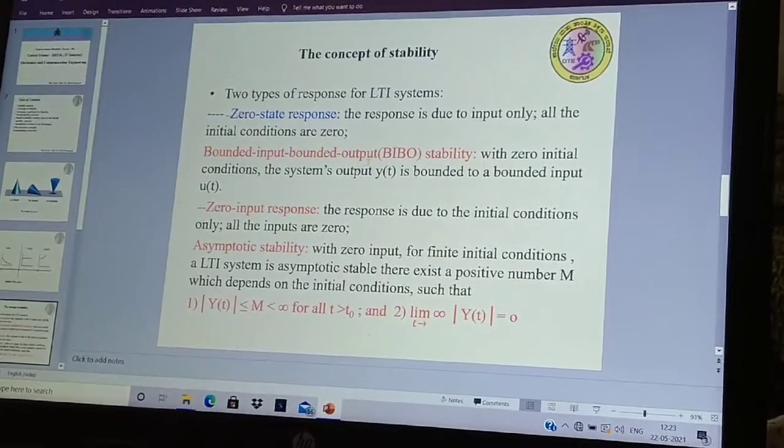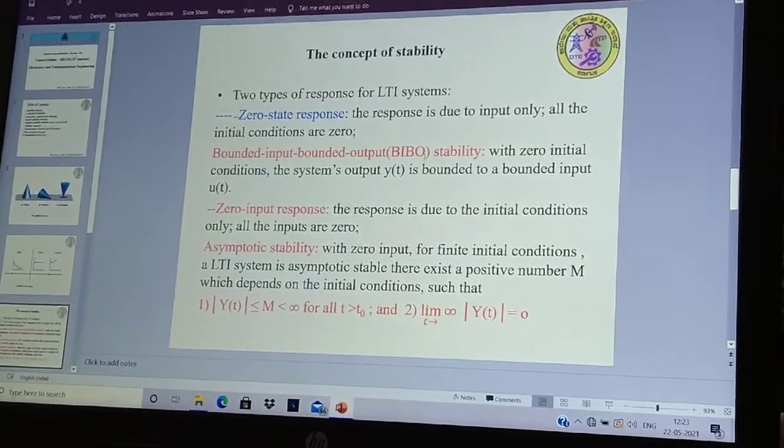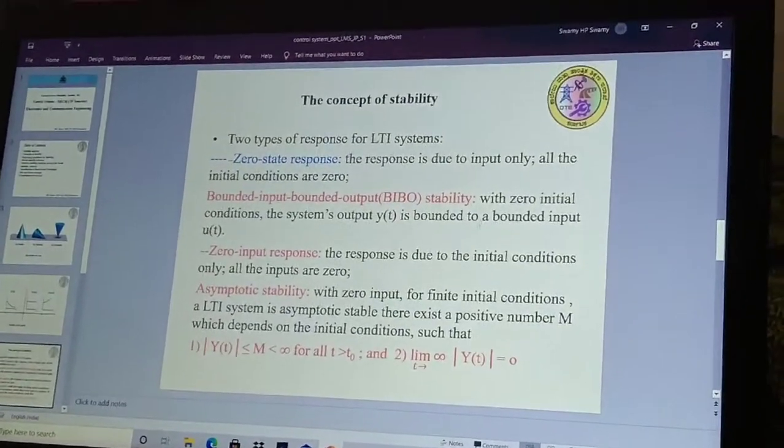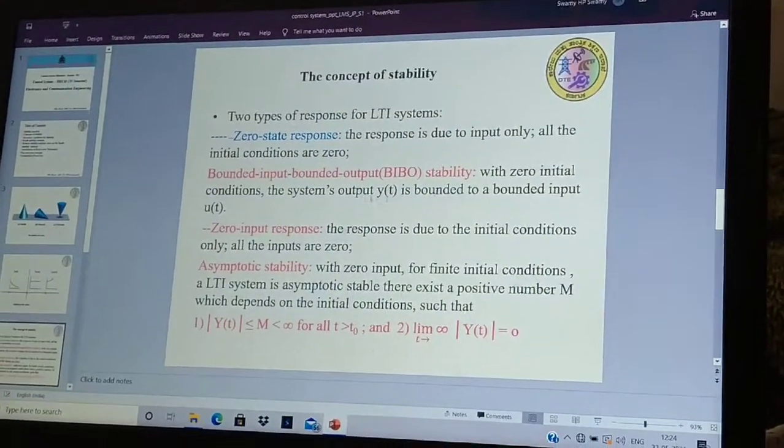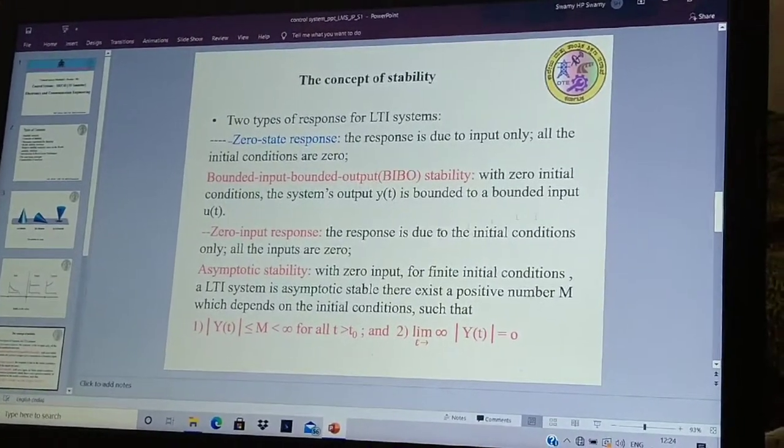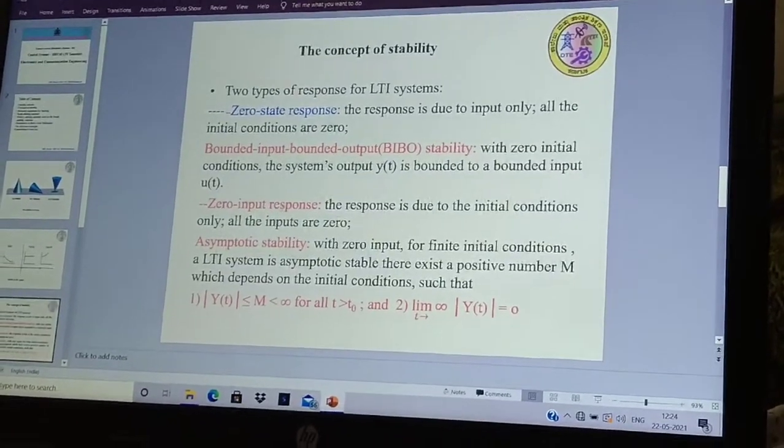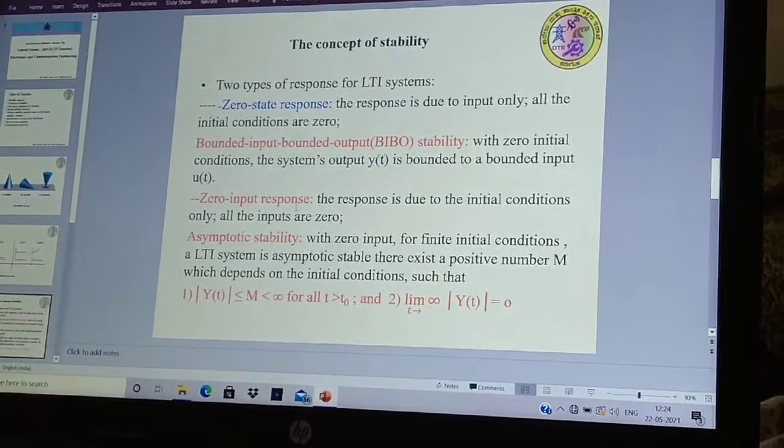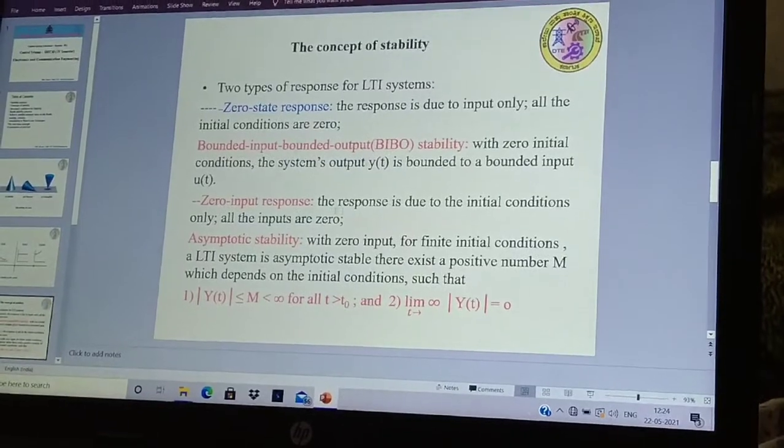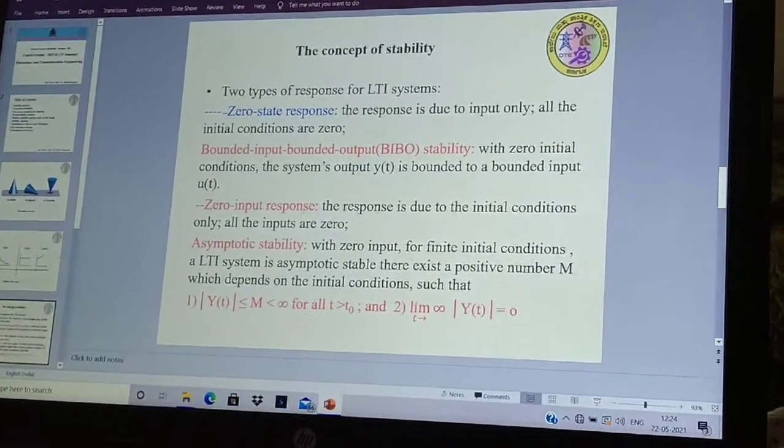Bounded input and bounded output stability. That is called BIBO stability. With zero initial conditions, the system output Y of T is bounded to a bounded input U of T. Bounded input, bounded output stability means with zero initial conditions, the system output Y of T is bounded to a bounded input U of T.